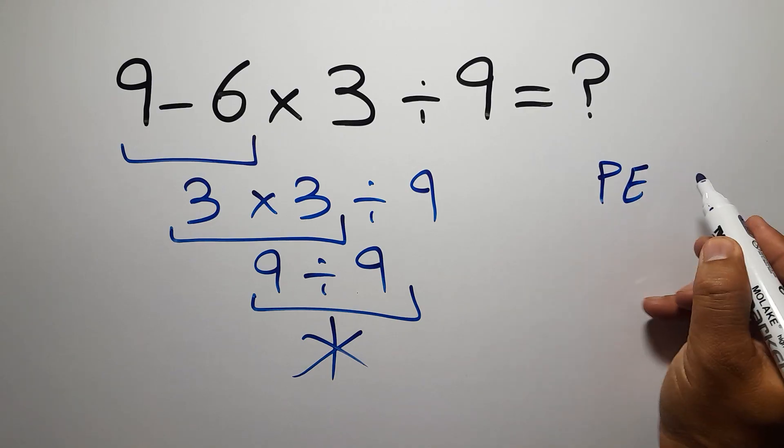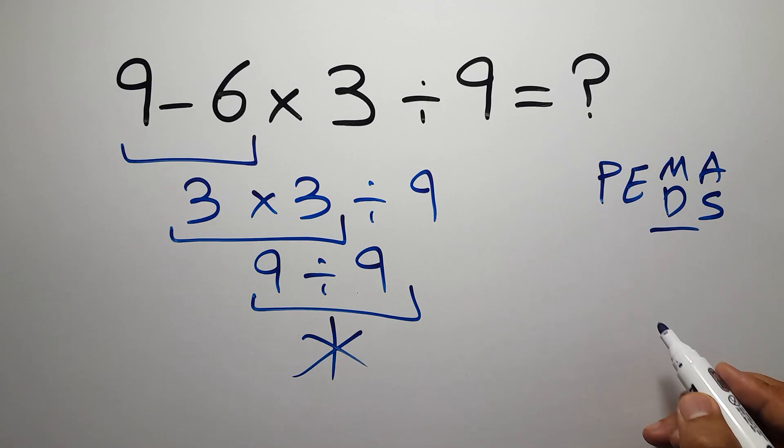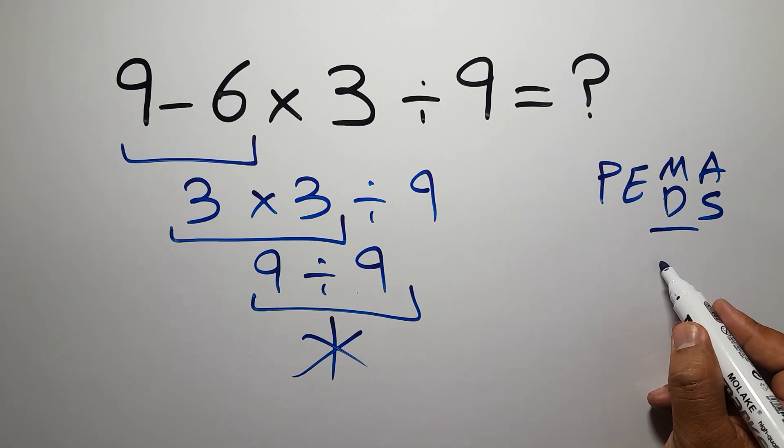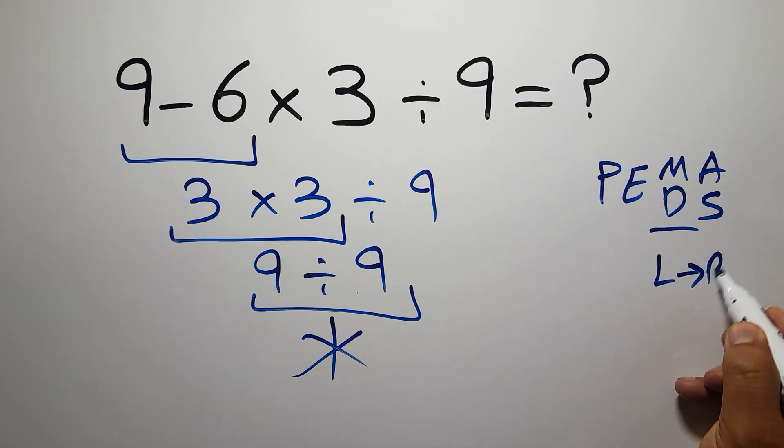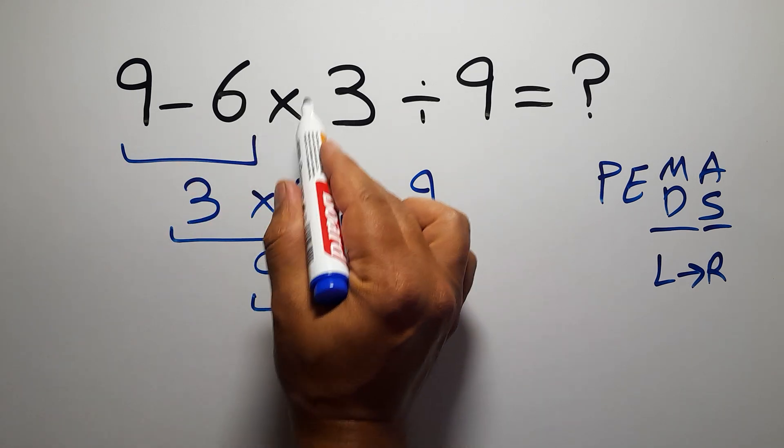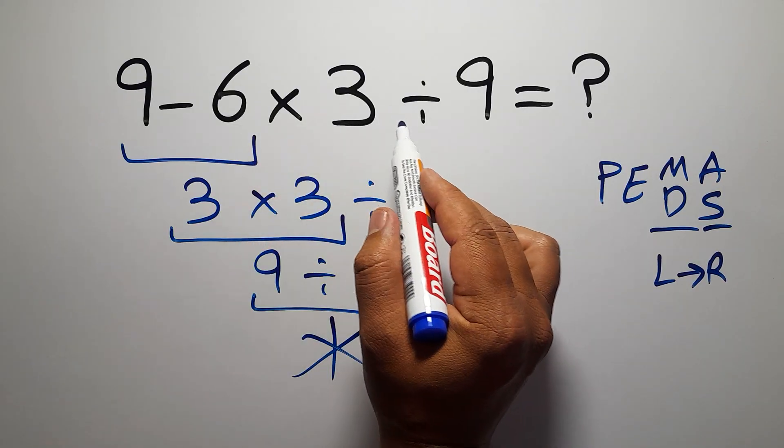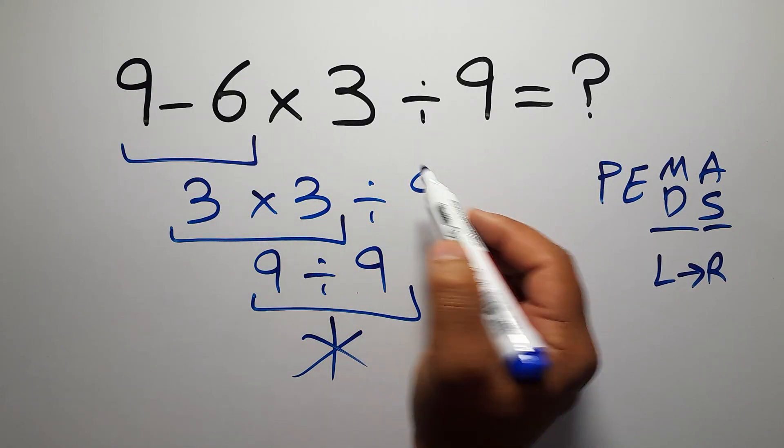We have to do parentheses, then exponents, then multiplication or division, and finally addition or subtraction. Remember that multiplication and division have equal priority and we have to work from left to right. The same applies to addition and subtraction. So here, first we have to do this multiplication, not this subtraction, because multiplication and division have higher priority than subtraction.